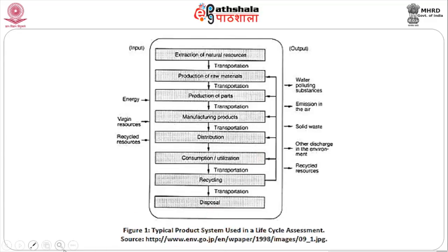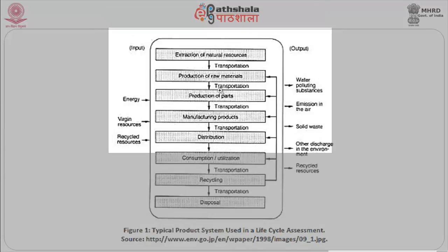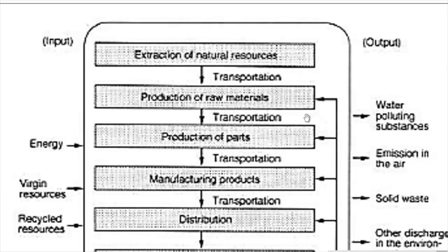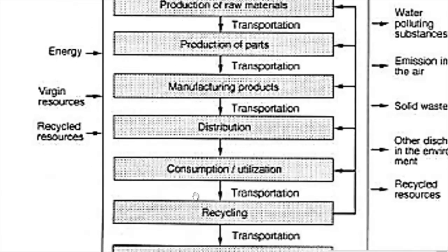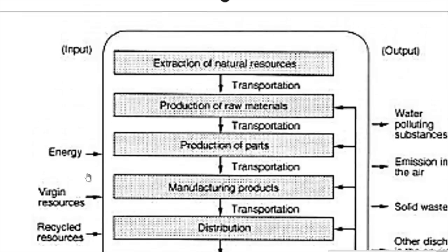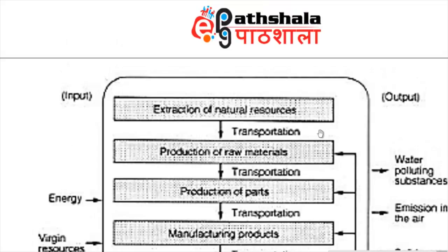Now look at this graph. It is similar to the life cycle analysis we have seen already — we are going to look at the input and the output of the materials. The input factors include energy, virgin resources — which are naturally available materials like stone quarried from a mountain or clay from the earth — and recycled resources, which need not be virgin and can come from anywhere for use in building industries.